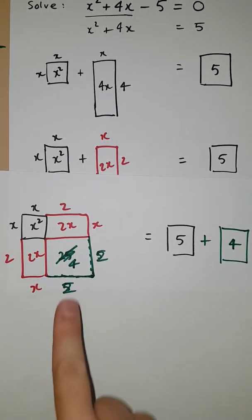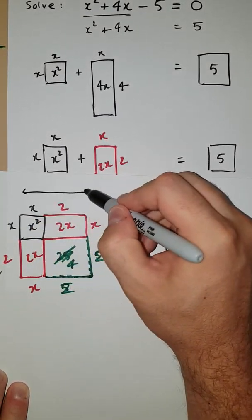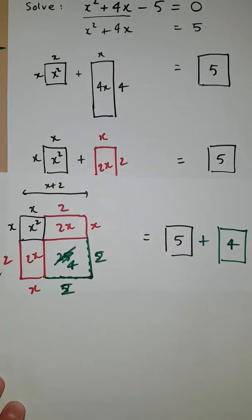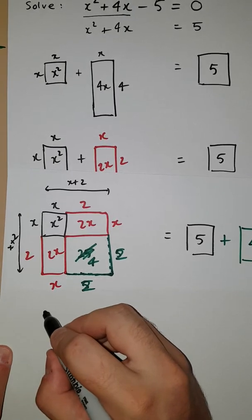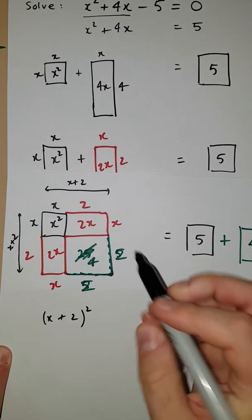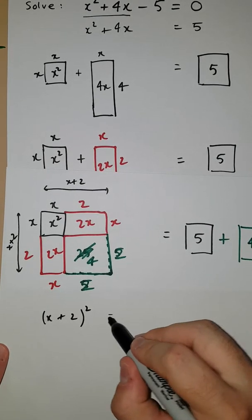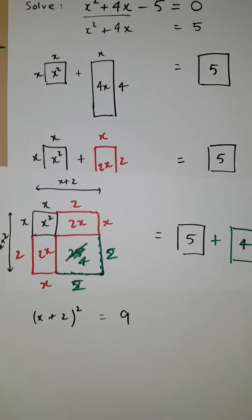Now if you look at this square here, notice that it has dimensions x + 2 by x + 2. So in terms of writing this thing as an area, we could write it as (x + 2)². That's just simply taking the side times the side. And over here, we've got 5 and 4, we can add them together to give us 9.